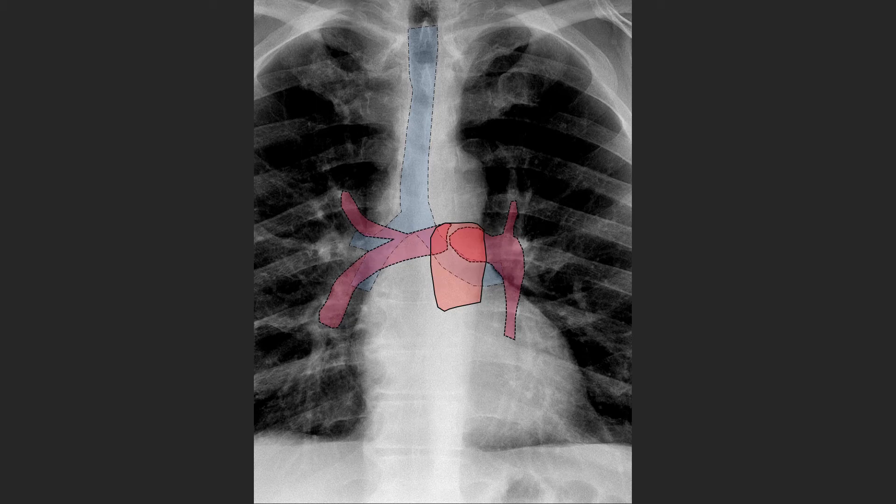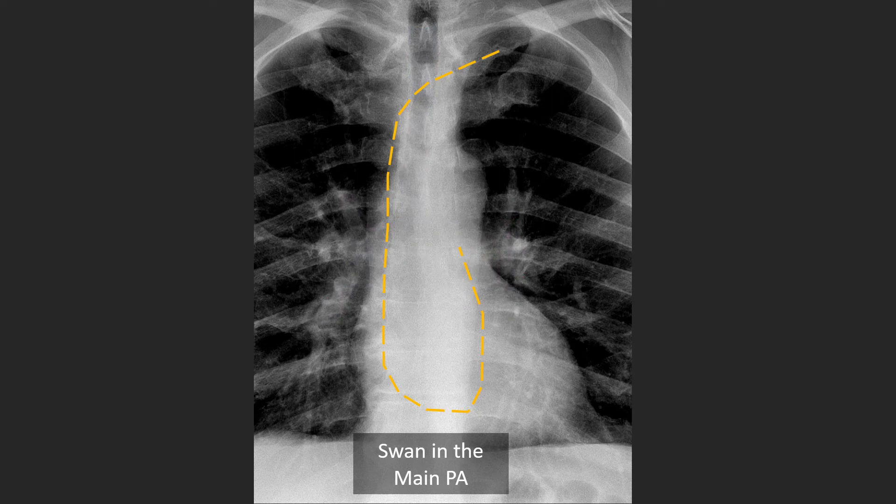Let's look at some examples. This would be an example of a Swan-Ganz catheter within the main pulmonary artery — you can see the location of the tip, which is just above or just below the left main stem airway.